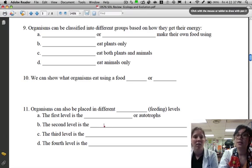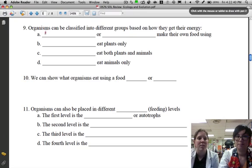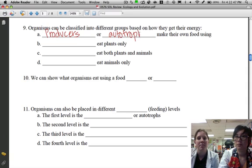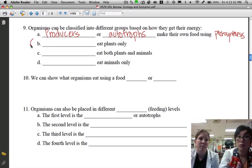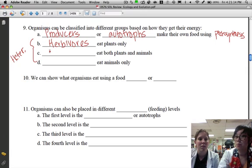Number nine: organisms can be classified into different groups based on how they get their energy. Our first group is our producers or our autotrophs, and those are organisms that make their own food using photosynthesis. The next three all have to do with organisms that have to eat, so these guys are all our heterotrophs. We can group our heterotrophs into different classifications. Organisms that only eat plants, those are our herbivores. Organisms that eat both plants and animals like us: omnivores. And then lastly, organisms that only eat animals are called carnivores.